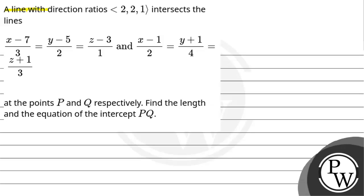Hello, let us read this question. A line with direction ratios 2:1 intersects the lines x minus 7 by 3 equal to y minus 5 by 2 equal to z minus 3 by 1, and x minus 1 by 2 equal to y plus 1 by 4 equal to z plus 1 by 3, at the points B and Q respectively. Find the length and the equation of the intercept BQ.